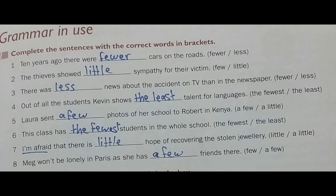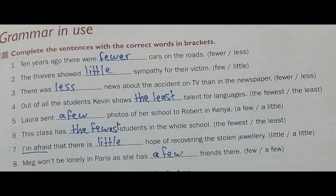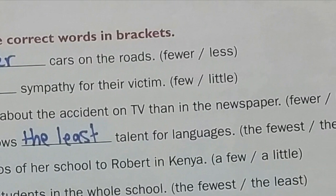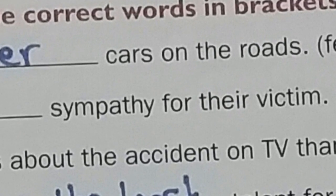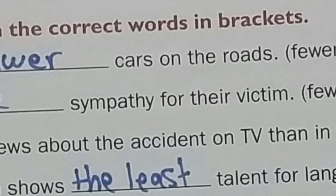We also use little, less, and the least with uncountable nouns that don't have an 's', and the abstract nouns that we cannot sense with our five senses. Number one: complete the sentences with the correct words. 'Ten years ago there were ___ cars on the road.' We have to choose either fewer or less, so here we choose fewer, because cars is a countable noun.